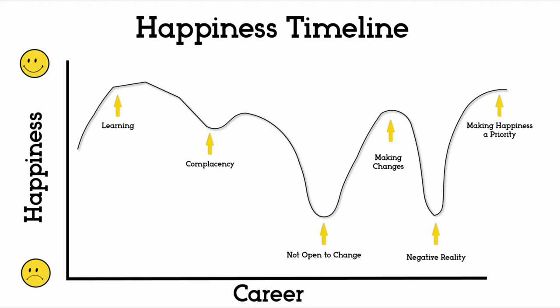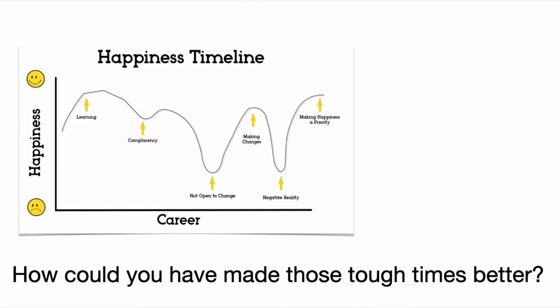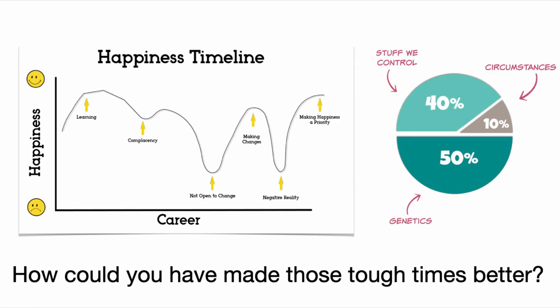When analyzing those struggles you might have had, ask yourself what you could have done differently to make those times better. We have a lot more control over our happiness than we might realize. Look for changes that you might have made to improve your situation. Only focus on things you have the power to change. Avoid investing negative energy in things you do not control. Instead, focus on the decisions you are making to find more happiness.